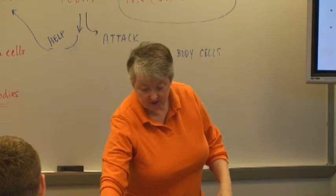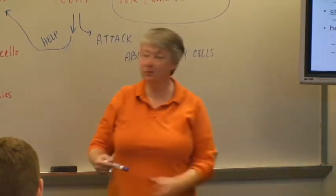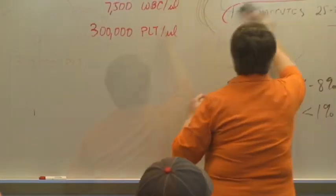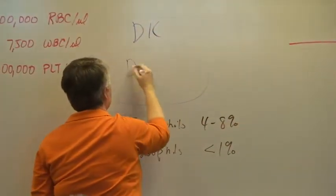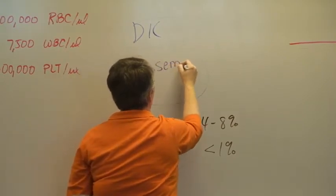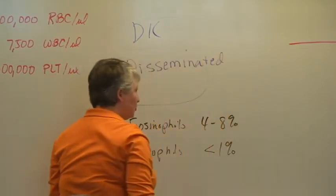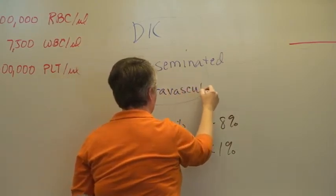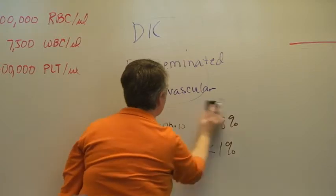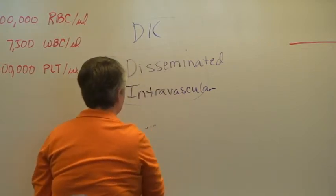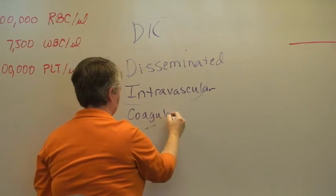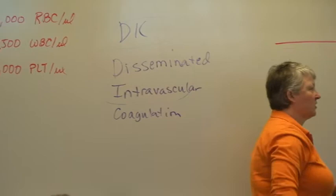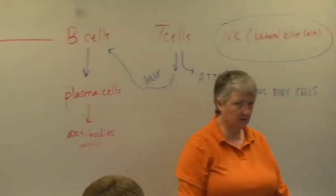If this hemostatic process — this coagulation process — gets out of control, there is a condition called DIC: disseminated intravascular coagulation. Once a person goes into DIC, it is very difficult to get them back.